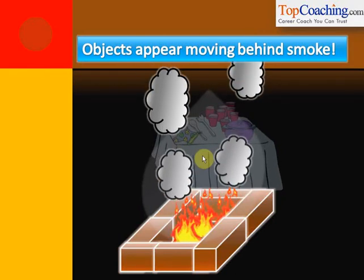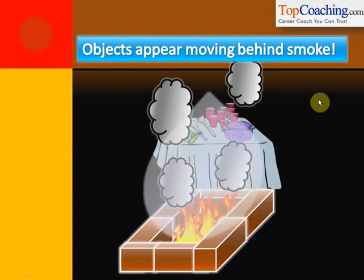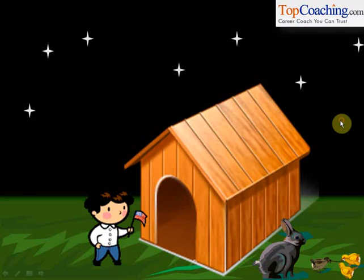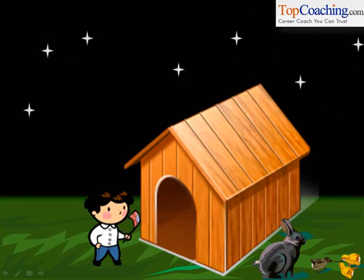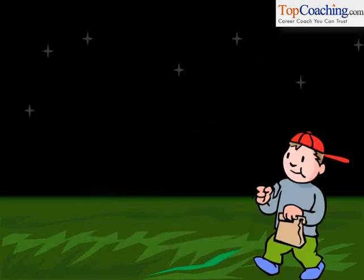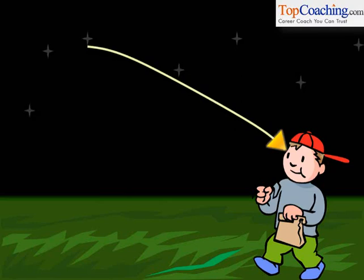A very similar phenomenon is responsible for the twinkling of stars. First of all, let's see how we see stars. You can see stars twinkling in the night sky. When the light from the stars reaches our eye, it does not travel in a straight line — the light from the stars travels along a curve to reach our eye. Why does this happen?